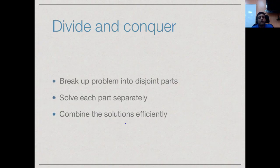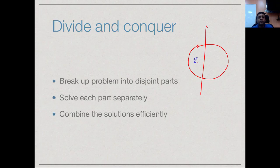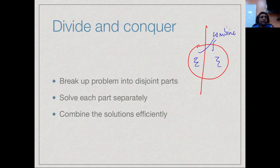This is a general principle that can be applied to many problems. If you can divide a problem into two or more parts such that each part can be solved independently with no overlap, you solve them separately and combine the results. In this algorithm the combination is merging. We will look later at other divide-and-conquer algorithms where the combination requires a different strategy. The key idea is that breaking a problem into smaller disjoint sub-problems and combining their solutions efficiently can yield significant gains in efficiency.